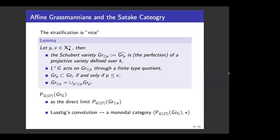With these nice properties of the affine Grassmannian and Schubert varieties, we can define the Satake category. By the properties noted, it makes sense to define the G(O)-equivariant perverse sheaves on the small piece — the Schubert variety Gr_{≤μ}. The Satake category then becomes the colimit of these smaller categories. By its definition, this is a category of certain perverse sheaves and its abelian category structure, but if you recall the algebra structure of the spherical Hecke algebra, we should expect more. And in fact, by the convolution construction, we can endow the Satake category with a monoidal category structure.